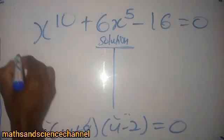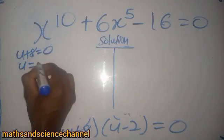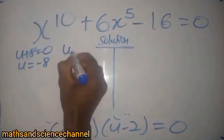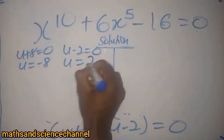So, from here, we have u plus 8 equal to 0, u will equal to negative 8, and then u minus 2 here equal to 0, u will equal to positive 2.